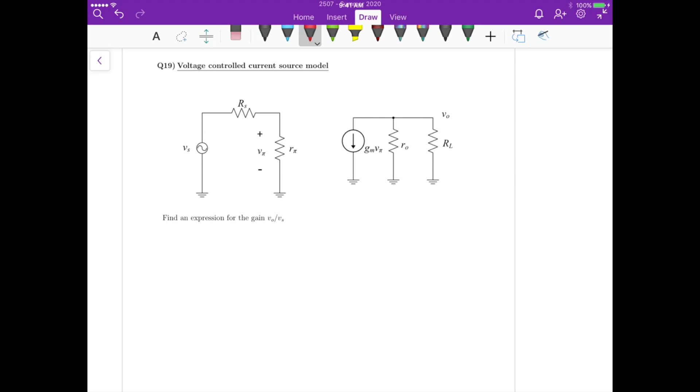This is problem 19, where we have a voltage-controlled current source model. We are going to use this model for the amplifying circuits that we will have in this class, 2507.